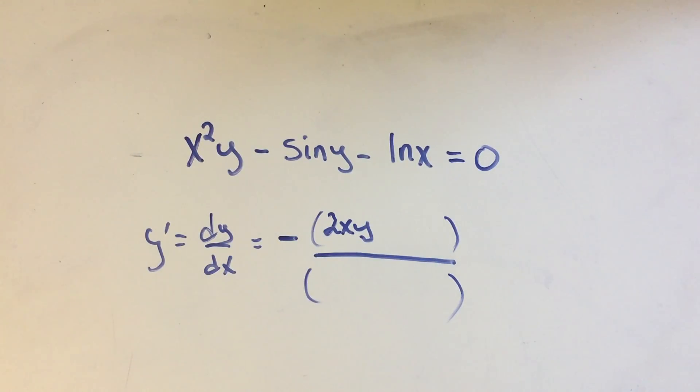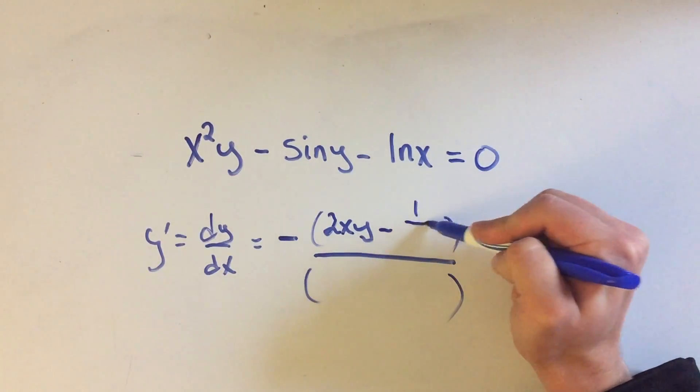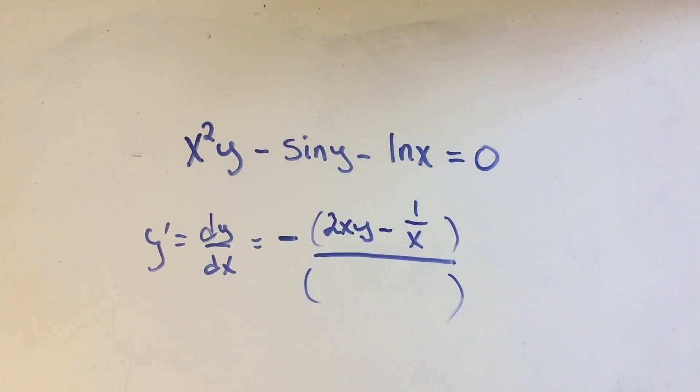Sine of y, well if y is being treated like a constant in this situation, the derivative of a constant is zero. So I'm just not even gonna write that part. And then it's minus the derivative of the natural log x. Well we know what that is by now. That's just 1 over x. So if you haven't seen that before, the derivative of the natural log x is 1 over x.